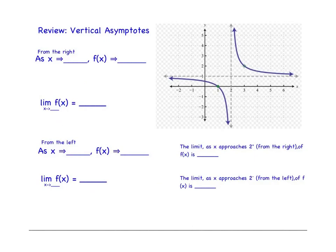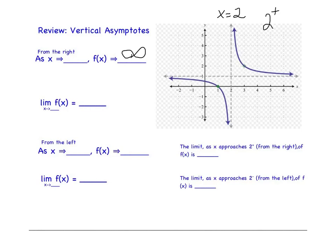We can use that same strategy to analyze the behavior at the vertical asymptote. We see the same graph — the vertical asymptote is at x equals 2. What we're going to look at is the behavior as x approaches 2 from the right: what is y doing? Well, y is increasing without bound, so f of x is going to infinity. As x approaches 2 from the right — written as 2 with a plus — the limit of f of x is infinity.